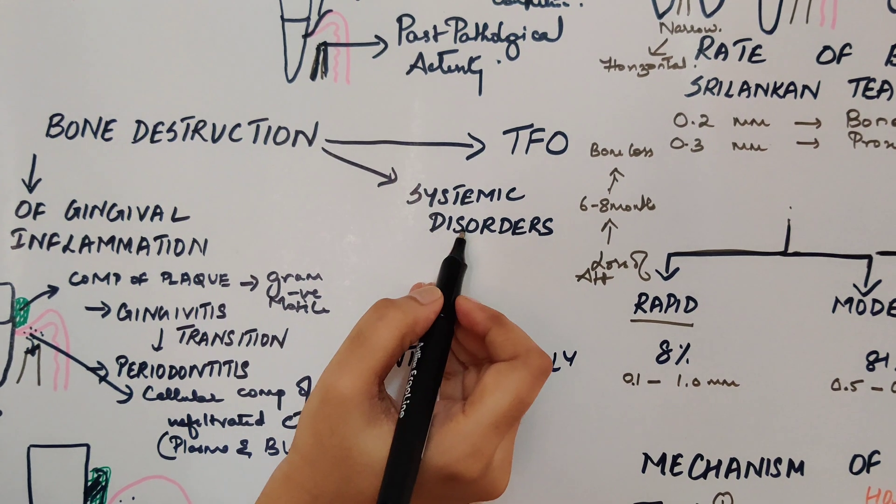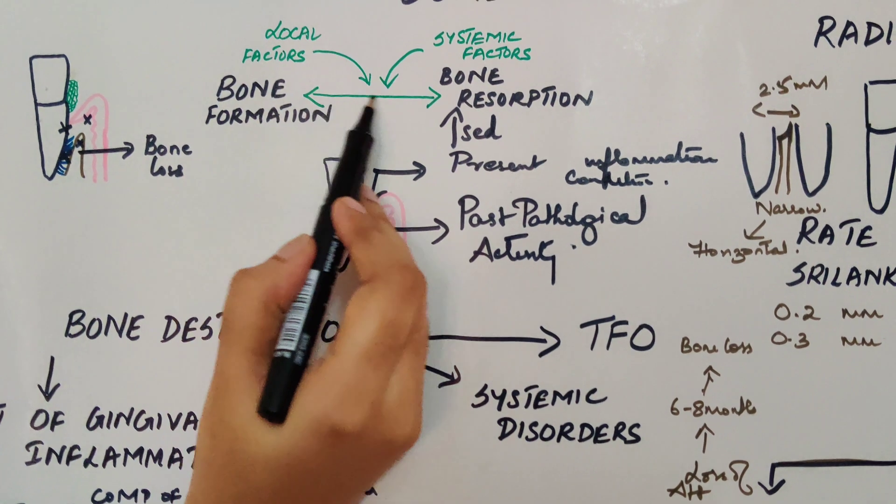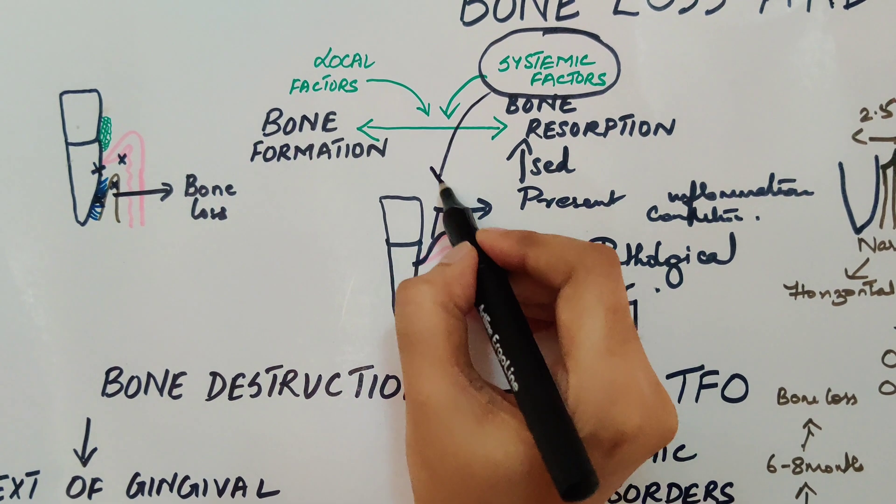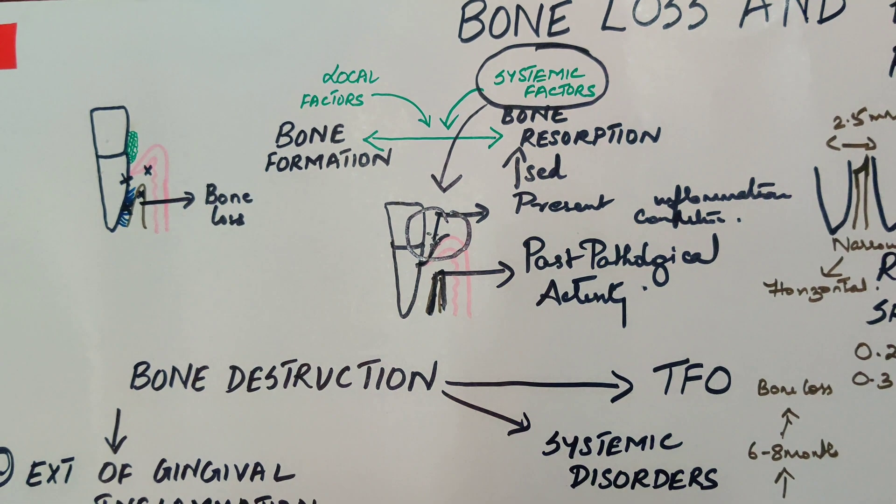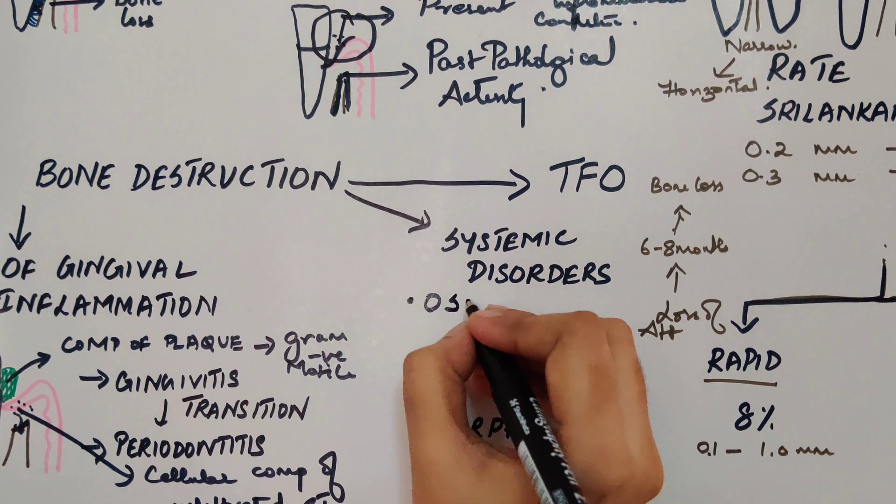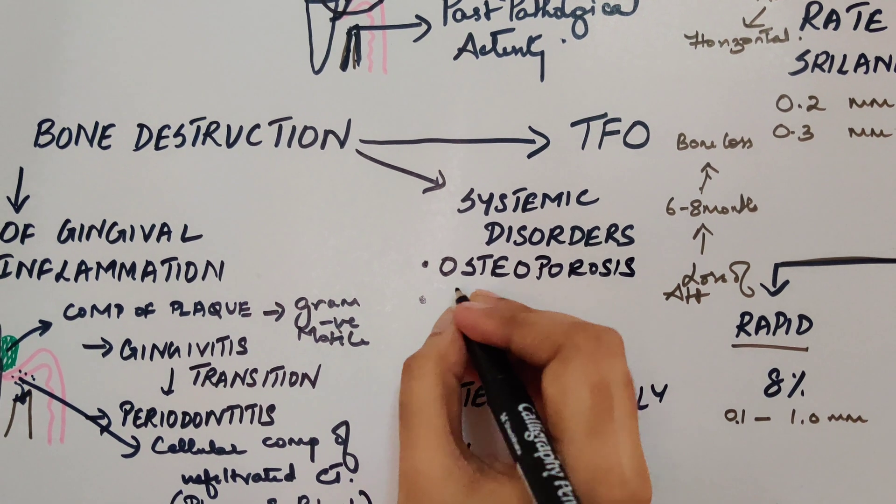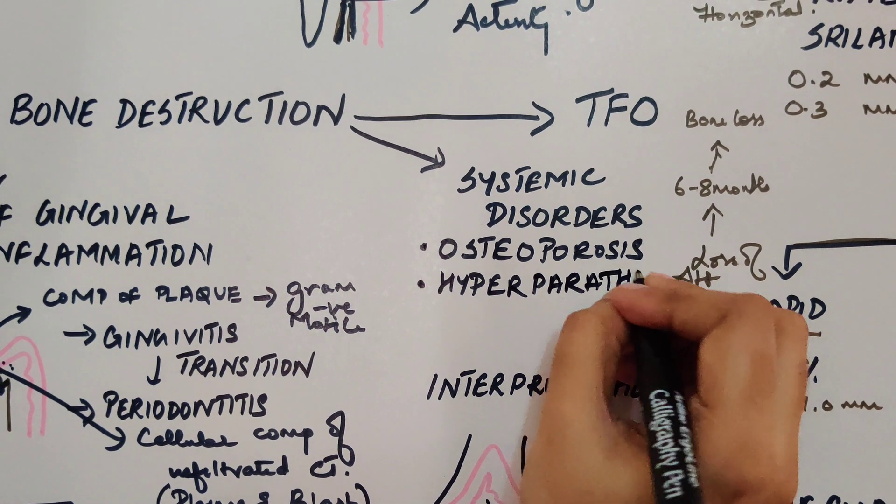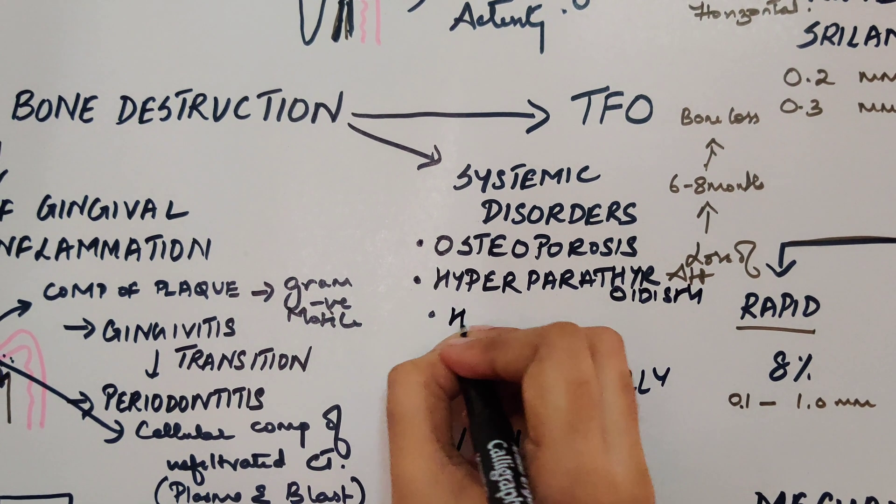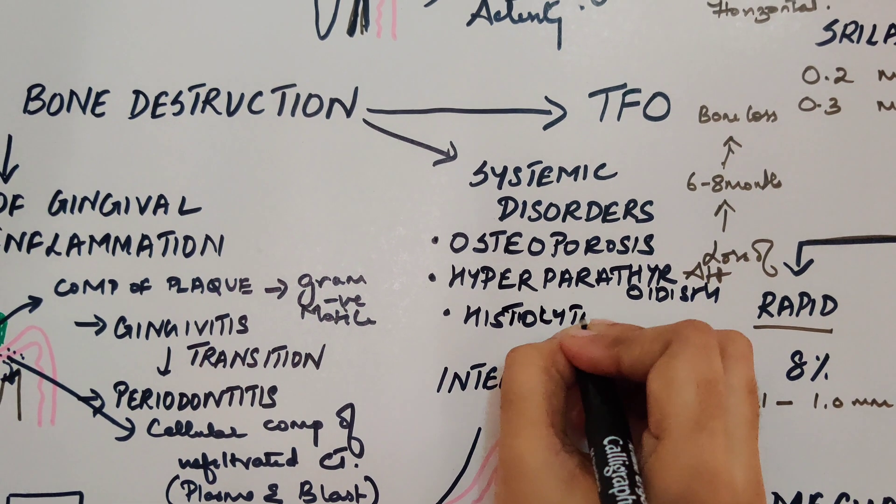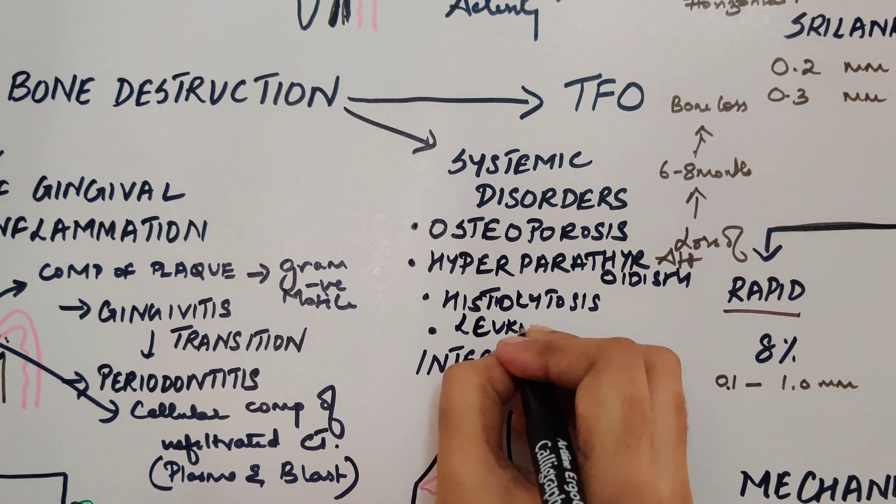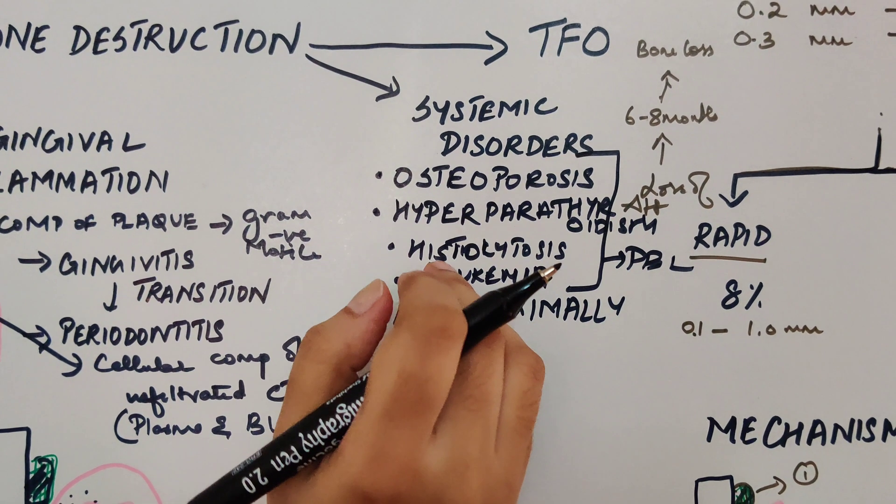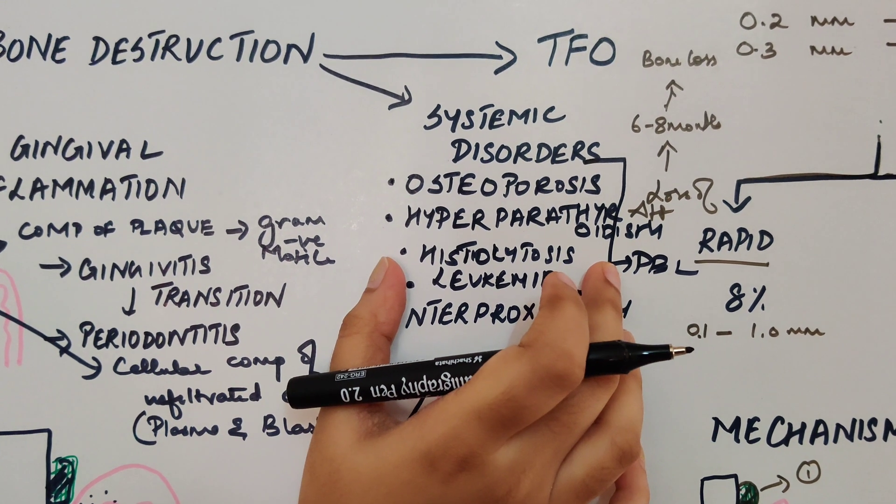The third cause would be bone destruction caused by systemic disorders. So here I told you that the bone formation and bone resorption are maintained in equilibrium by local factors and systemic factors. So if there is any disturbance in the systemic factors, what happens is even a small inflammatory lesion would be magnified in this case. The conditions which will cause this periodontal bone loss will be osteoporosis and certain generalized skeletal deformities like which occurs in hyperparathyroidism, histiocytosis, and leukemia. All this would cause periodontal bone loss, but the mechanism of how it is going to cause periodontal bone loss is not going to be that which occurs in the usual periodontal problem.